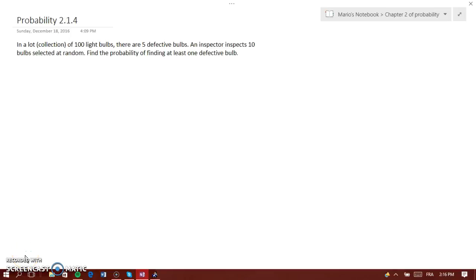Hello everyone, here it says that in a lot of 100 light bulbs there are 5 defective bulbs. An inspector inspects 10 bulbs selected at random. Find the probability of finding at least one defective bulb.